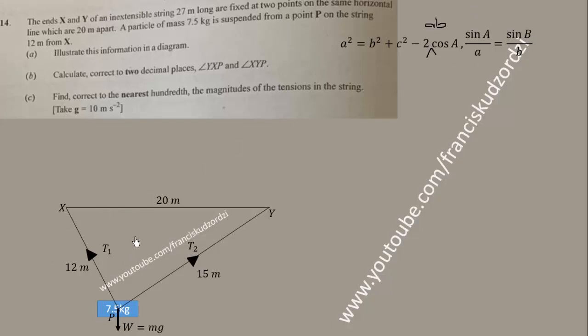Using the cosine rule, let's find this angle first. 15² = 12² + 20² - 2(20)(12)cos(∠YXP). When we simplify this, 15 squared will be 225 = 144 + 400 - 480 cos(∠YXP).